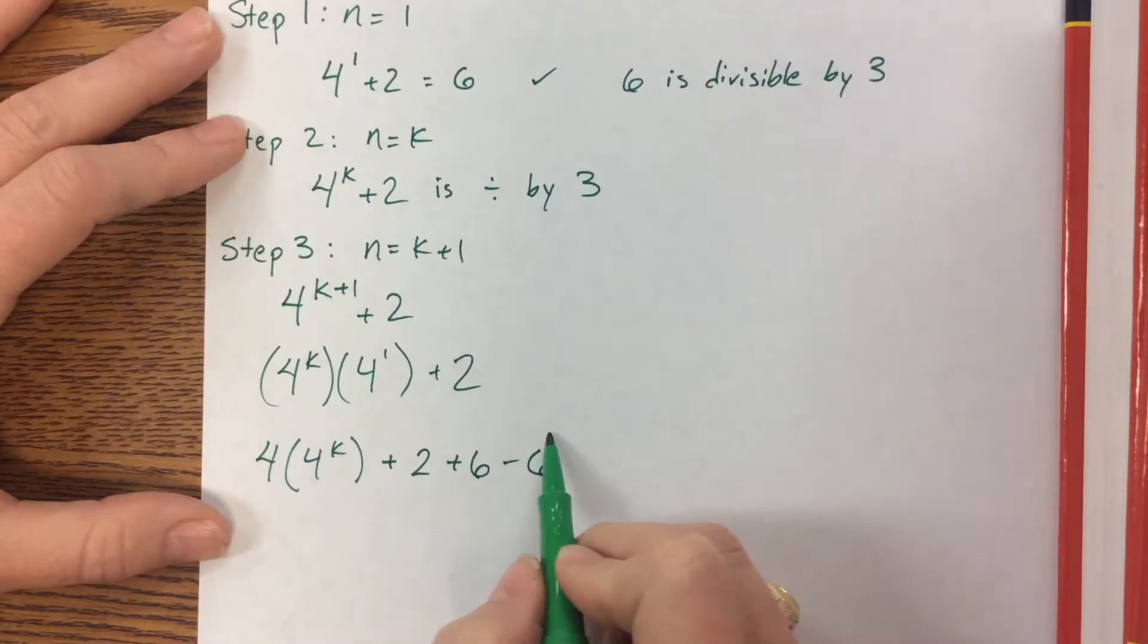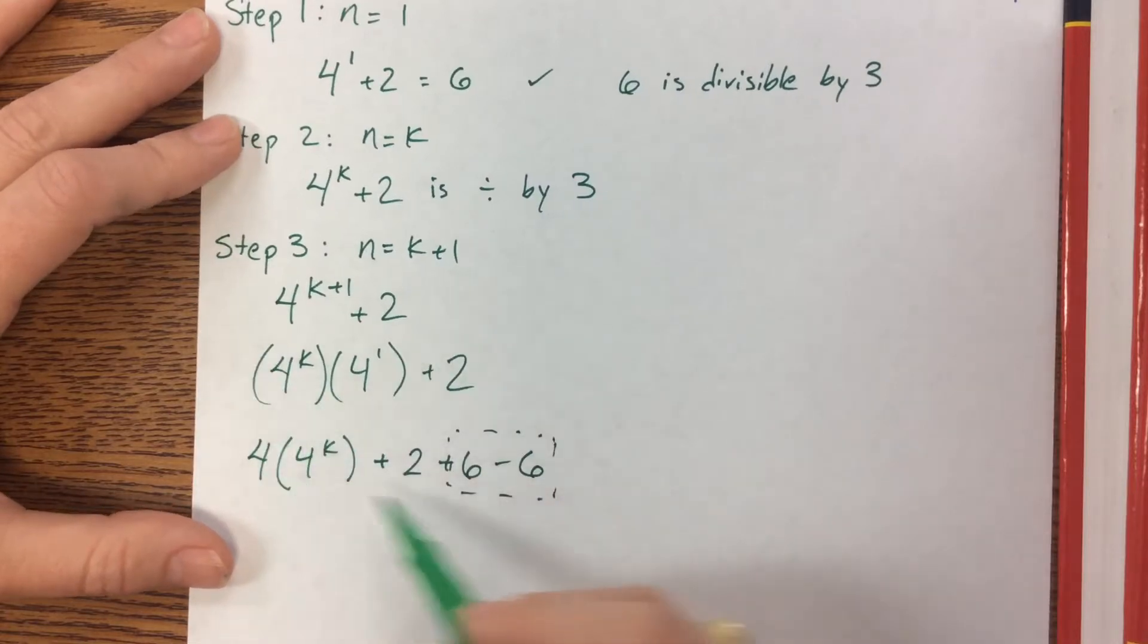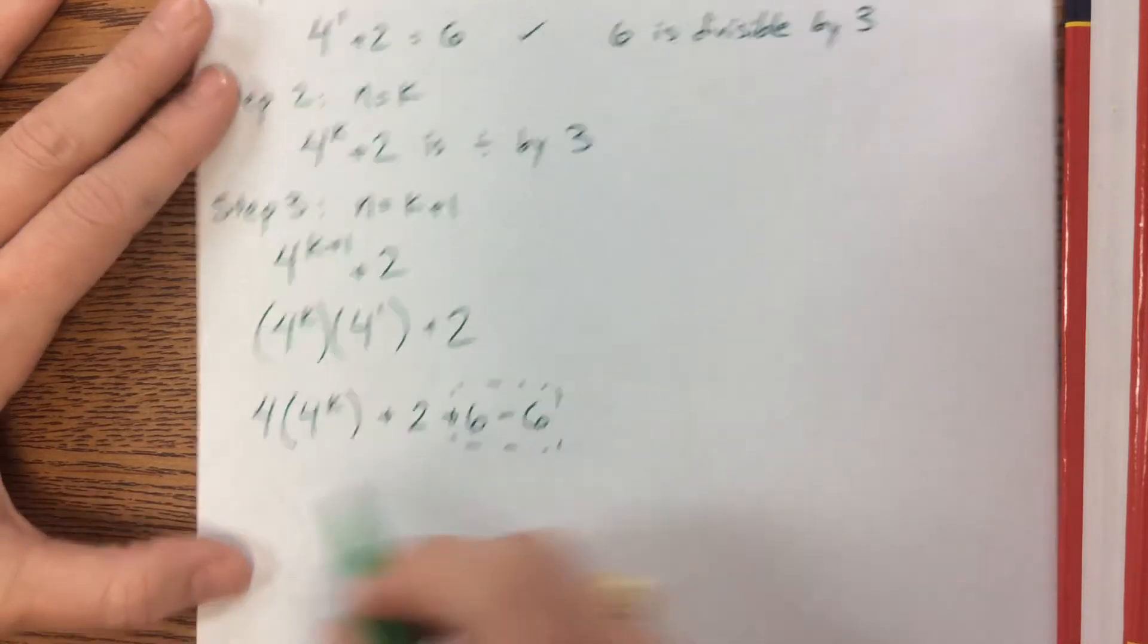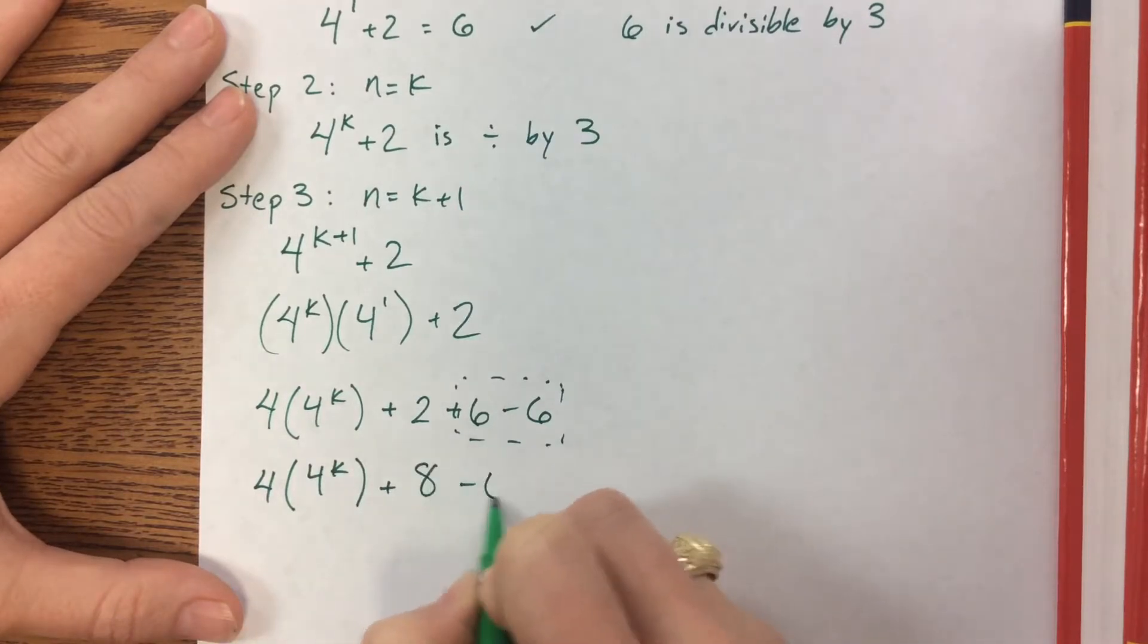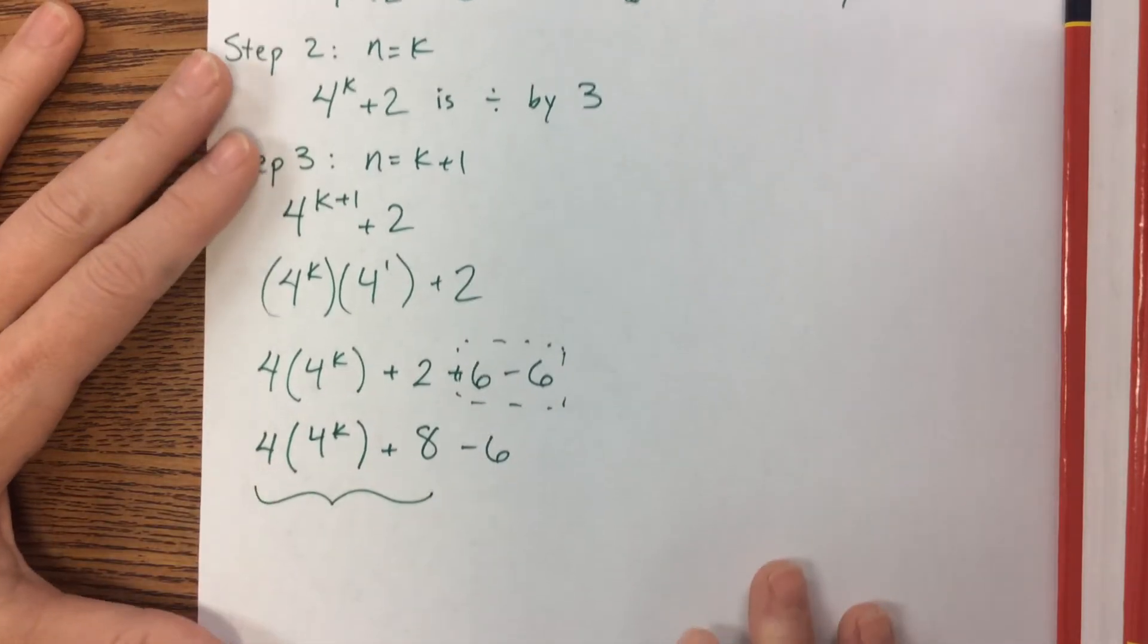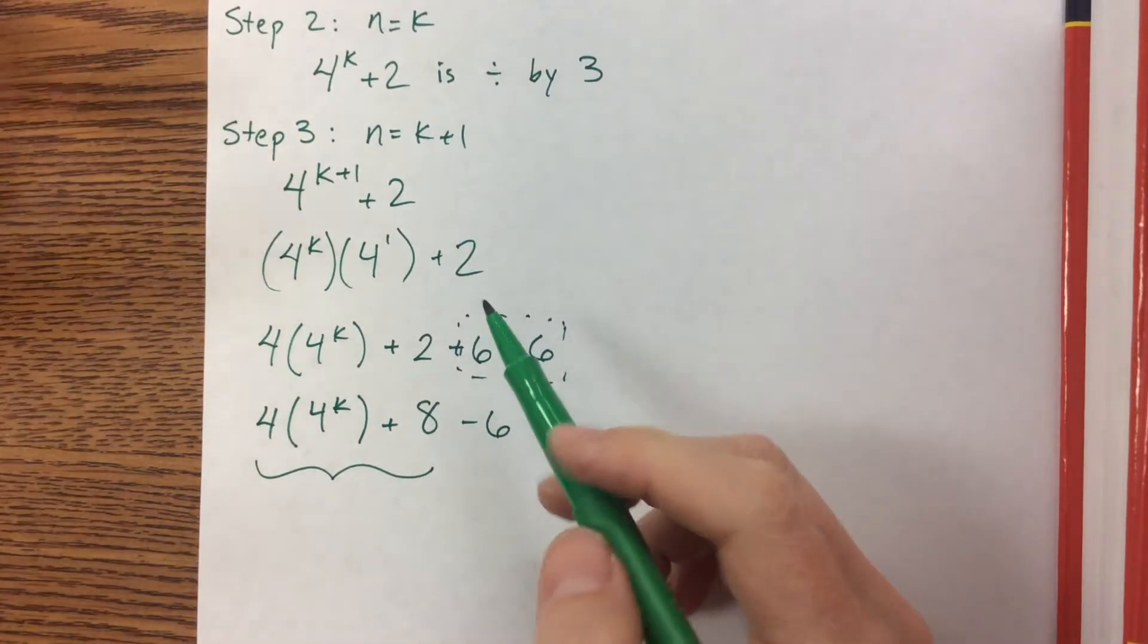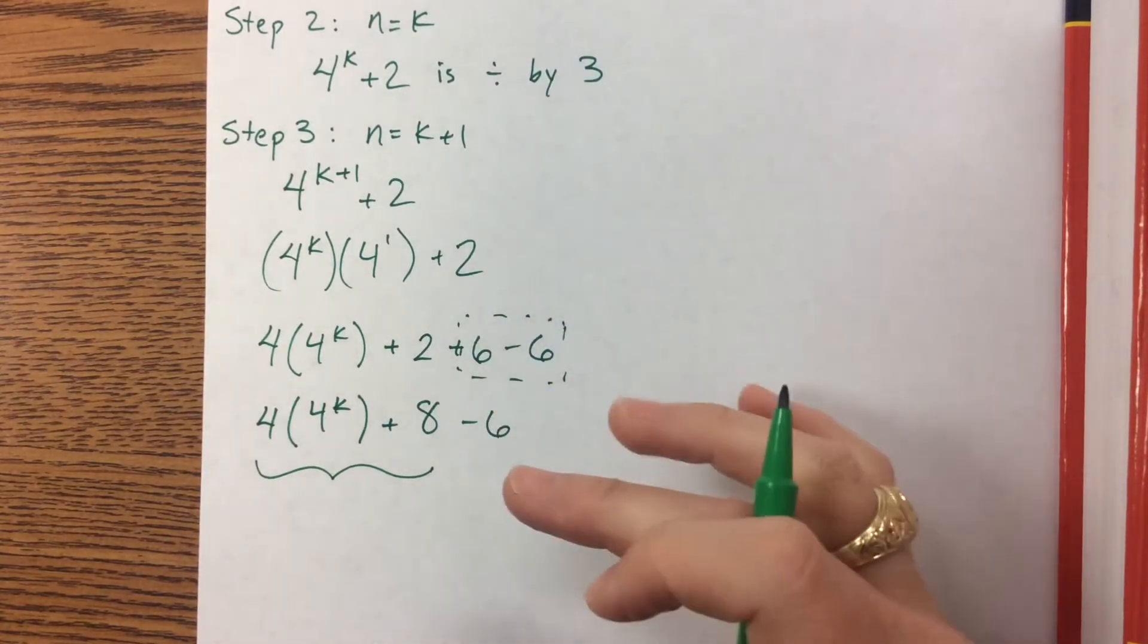This right here in essence what I have done is I have added 0. So I still, all of this is what I had before and then I'm adding 0. So rewriting this I have 4 times 4 to the k plus 8 minus 6. Well now I can factor something out of those two terms.